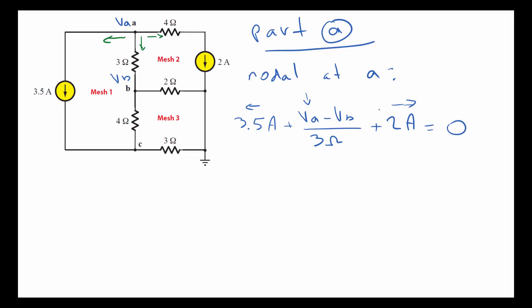Now let's do nodal at B. When we do this one, we have to make sure that we denote VC. The currents are going to be flowing out in three directions, because we're assuming now that VB is the highest voltage node and all the currents flow out from that node. The current going upwards is VB minus VA divided by 3 ohms.